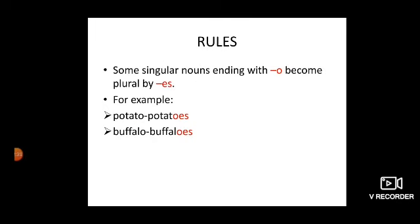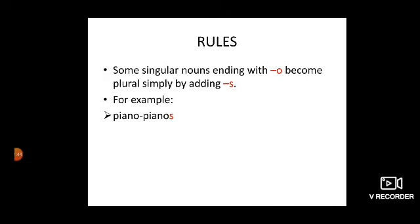Some singular nouns ending with O become plural by E-S. For example, potato become potatoes. We add E-S at the last. Buffalo become buffaloes. Some singular nouns ending with O become plural simply by adding S. Piano become pianos.